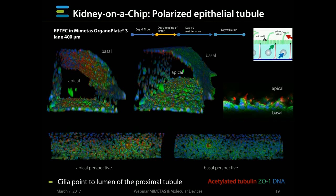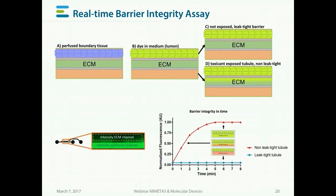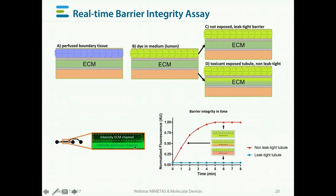Once we have a tubule, we can measure its leak-tightness inside the organoplate using a real-time barrier integrity assay. We enter a fluorescent dye into the tubule — this dye can be conjugated to dextran of any size, allowing you to discriminate between large molecule and small molecule leakage. When the tubule is leak-tight, the dye will stay within the tubule; when it's leaky, the dye will start to migrate into the adjacent gel through diffusion. By quantifying the ratio of fluorescence intensity inside the tubule channel versus the adjacent channel, you get a dynamic measurement of the leakiness or barrier integrity of a tubule. This assay is fully unique because it's time-dependent, dynamic, and you can revisit it many times.